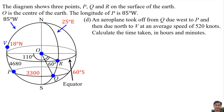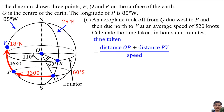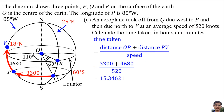Our plane took off from Q due west to P, and then due north to V, at an average speed of 520 knots. Calculate the time taken in hours and minutes. The time taken is the distance QP plus distance PV divided by speed. Distance QP is 3300 nautical miles and distance PV is 4680 nautical miles, so the time taken is 15.3462 hours, which converts to 15 hours and 21 minutes.